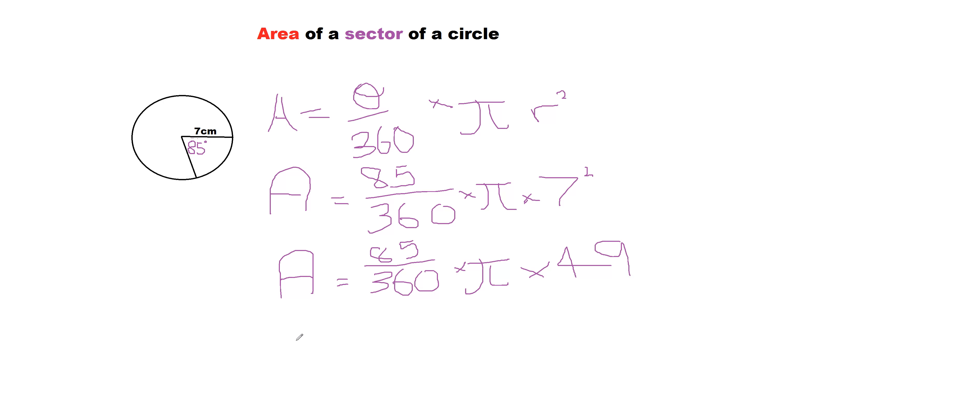Okay, so now what we're going to do is do 85 divided by 360, and let's see what that equals. Equals 0.23611111. Okay, so what we're going to do, so that we can get a more accurate answer, is we're going to leave this in our calculator with all those ones.